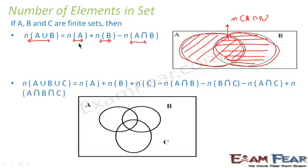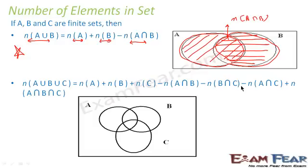Now for three sets, the number of elements in A union B is the number of elements in A plus the number of elements in B minus the number of elements in A intersection B. To extend this to three sets, we also subtract elements in B intersection C and A intersection C, then add back A intersection B intersection C.